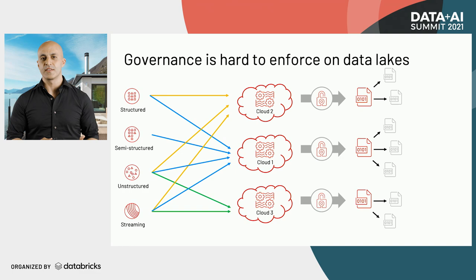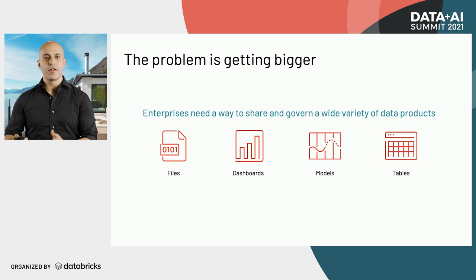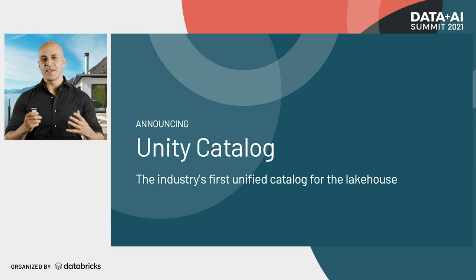Most enterprises also want to share, audit, and govern lots of data products, like machine learning models, files, dashboards, and other data assets. There is no great way to solve this in a unified way today. That's why I'm really excited to share the industry's first unified catalog for the lake house — the Unity Catalog.